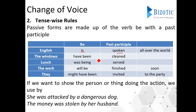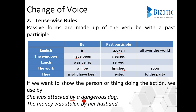Other passive form examples include: 'The windows have been cleaned,' 'Lunch was being served,' 'The work will be finished soon,' and 'They might have been invited to the party.' If you want to show the person or thing doing the action, use 'by' — for example, 'She was attacked by a dangerous dog' or 'The money was stolen by her husband.' So remember: Rule One is changing the sequence of subject and object, and Rule Two is the tense voice rule. These two rules will be enough to solve any question on changing active voice to passive voice or the other way around. In the next video, we will see how to solve problems based on this. Thank you so much.